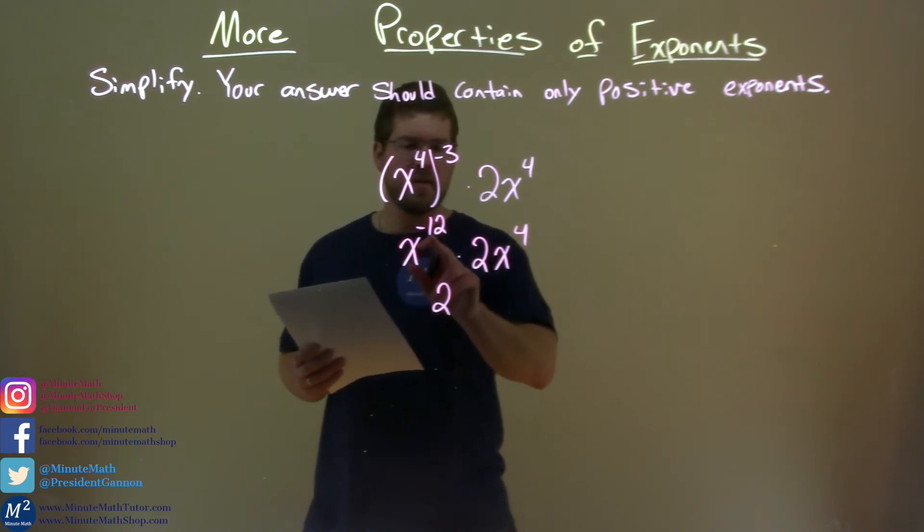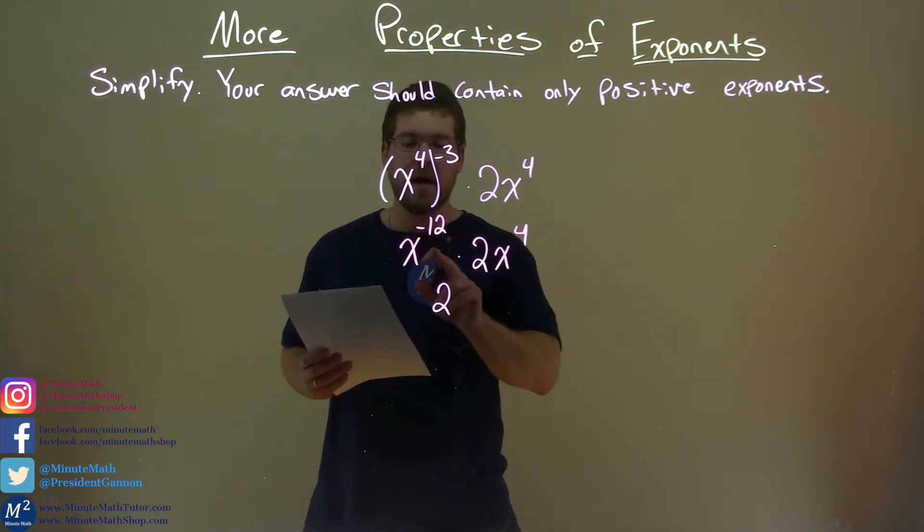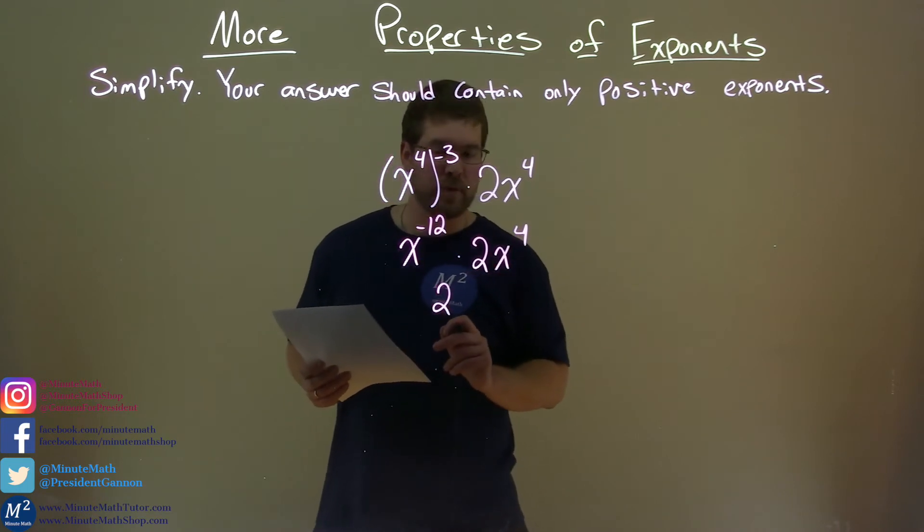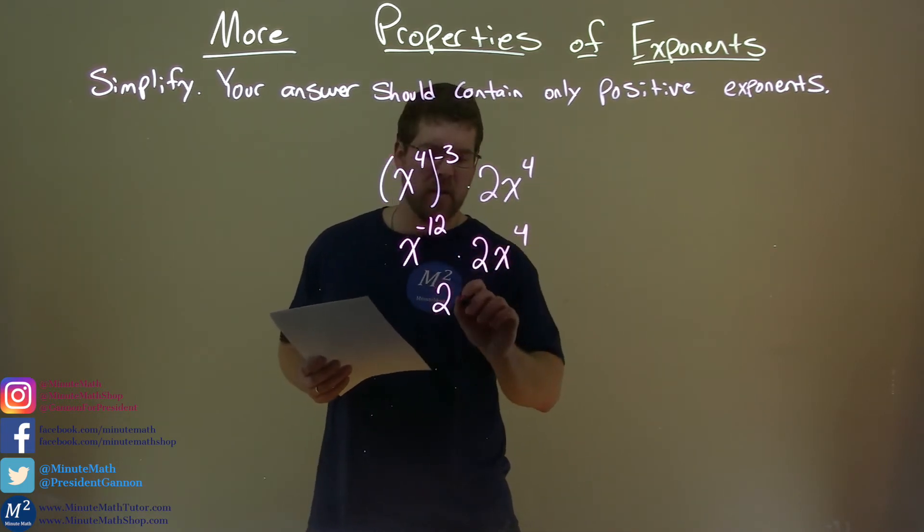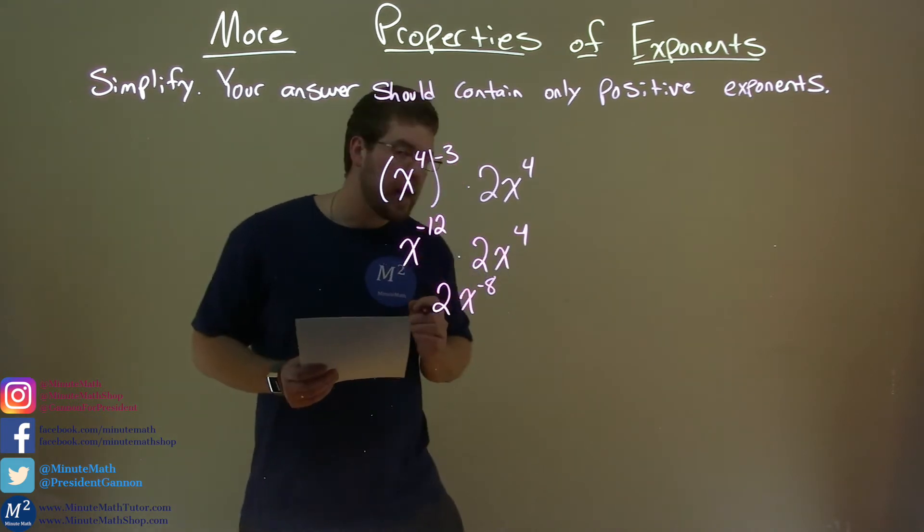Then we have x to the negative 12 times x to the 4th power. In this case, we add the exponents. So negative 12 plus 4 is negative 8. So we have x to the negative 8th power, and we're not done.